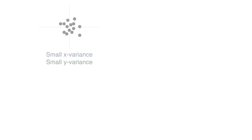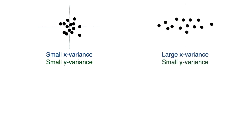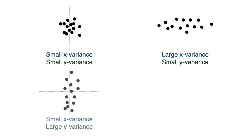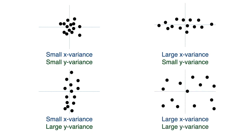Let's look at some examples of datasets. A dataset that is pretty centered has a small x-variance and a small y-variance. One spread out only horizontally has a large x-variance and a small y-variance. One spread out only vertically has a small x-variance but a large y-variance. And one spread out in both directions has a large x-variance and a large y-variance.